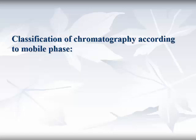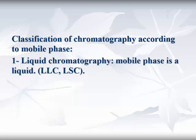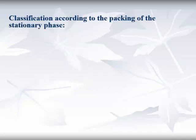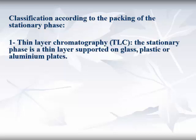Other classifications of chromatography are according to the mobile phase. The first is liquid chromatography, where the mobile phase is a liquid, and gas chromatography, where the mobile phase is a gas. According to the stationary phase, thin layer chromatography (TLC) uses a thin layer supported on a glass, plastic, or aluminum plate.